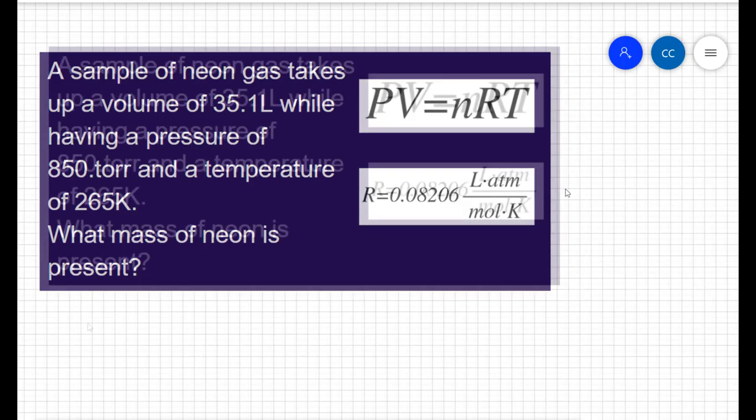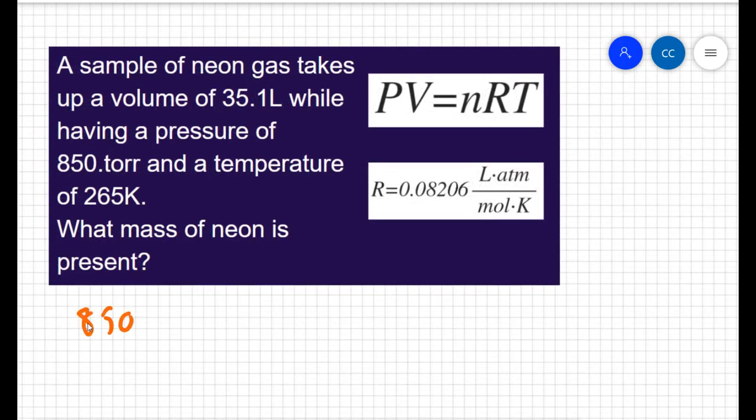Just like with the last problem, I want to make sure the units of my data are correct before I use the ideal gas law. Liters are good and kelvin are good, but if you look at the ideal gas constant, I want my pressure in atmospheres.